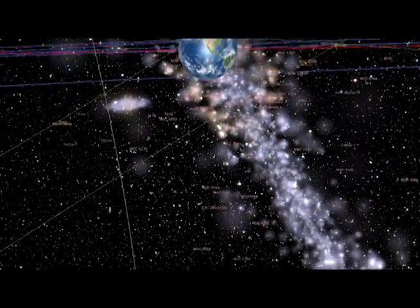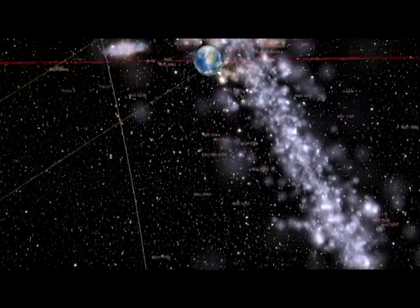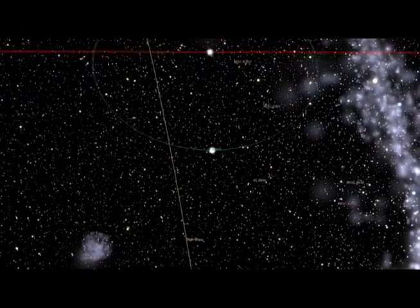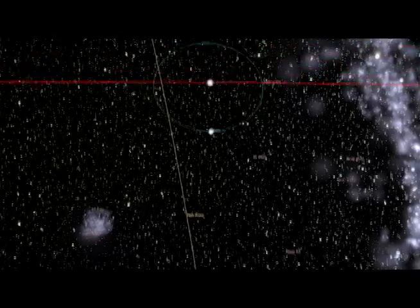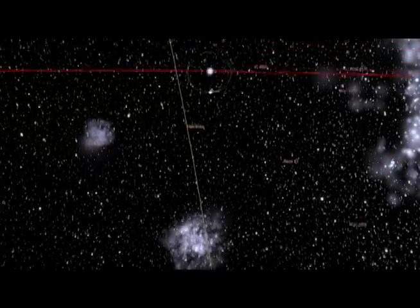We're leaving the plane of the solar system now. We're moving several multiples of the speed of light, which, of course, is physically impossible, but these sort of speeds are necessary to really see any motion, just because the objects we're dealing with are so large and the distances are so vast.